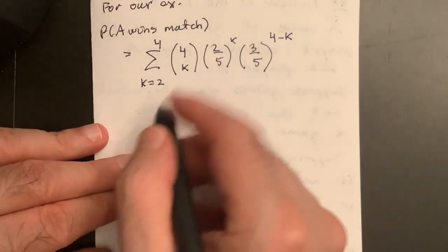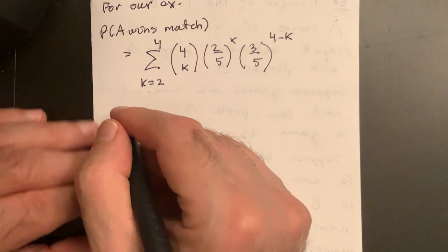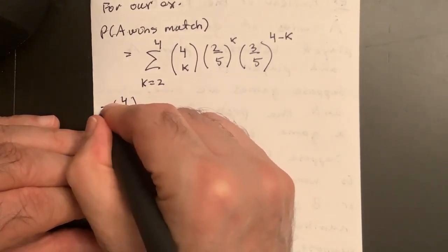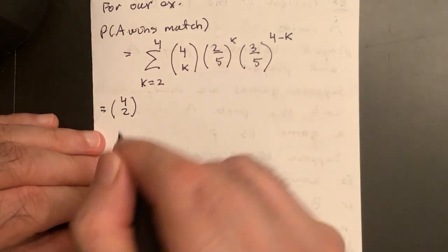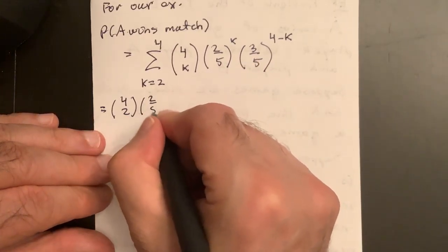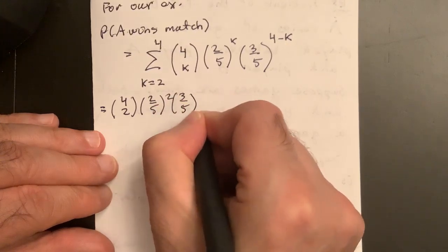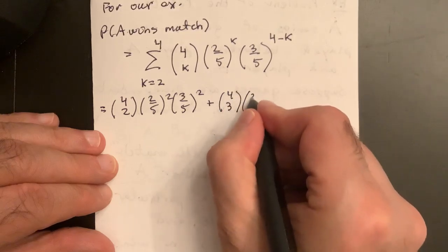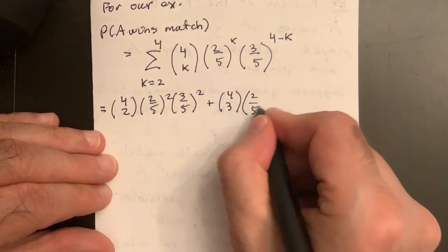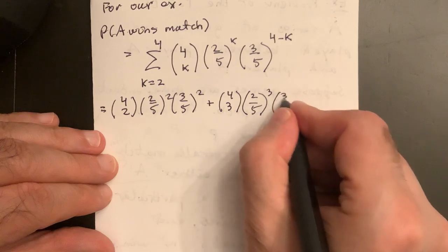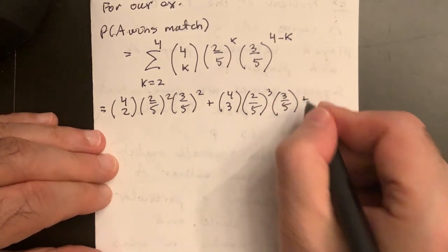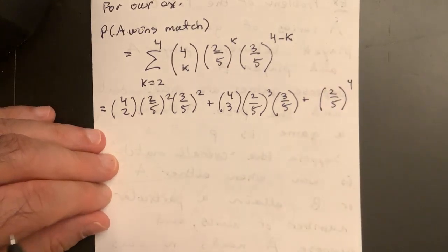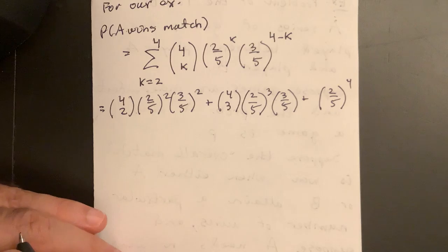Okay, let's actually do this and see if we get the same thing. So we get, at two, we get four choose two, two-fifths squared, three-fifths squared, right? Plus four choose three, two-fifths cubed, three-fifths. Plus four choose four, which is one, two-fifths to the fourth, three-fifths to the zero. Okay, we can actually compute this.